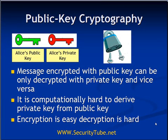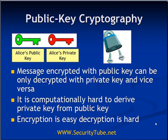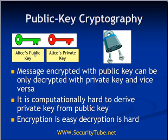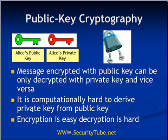Another important property is that given a public key, it is computationally very difficult to derive the private key. Every person has two keys — a private key and a public key. Anyone who wants to send a message to Alice must encrypt it with Alice's public key. No one in between can decrypt that message, because decryption requires Alice's private key. In other words, encryption is very easy but decryption is very difficult.